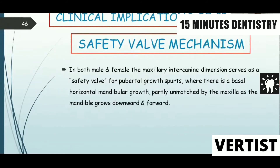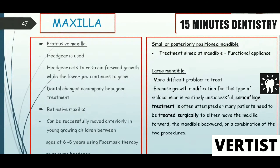Clinically, there are important implications of growth. One key concept is the safety wall mechanism: the maxillary intercanine dimension serves as a safety wall, since the mandible grows downward and forward, often unmatched by the maxilla. If there is a protrusive maxilla, treatment uses a headgear, which acts to restrain forward maxillary growth while the lower jaw continues to grow.